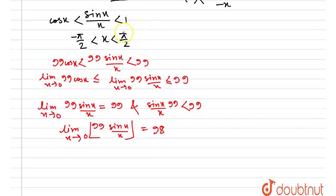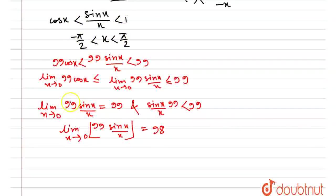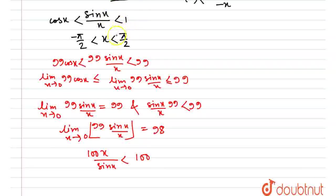Similarly, x by sinx that is greater than 1 and x by sinx is less than 1 by cosx. That is x by sinx 100 of it is less than 100. Just flipping it x by sinx is greater than 1. So, this would be 100 by cosx actually. Here x by sinx that is less than 1 by cosx. That becomes that and x by sinx that is greater than 100.